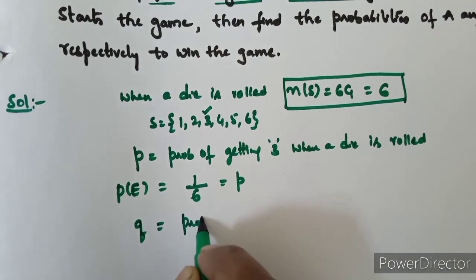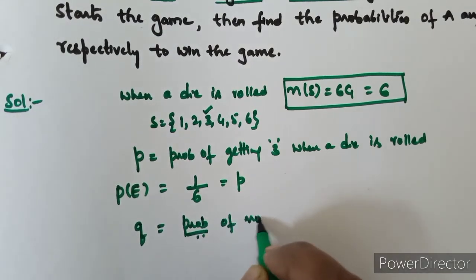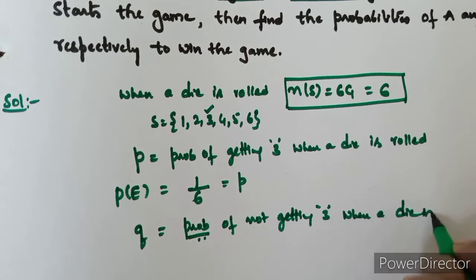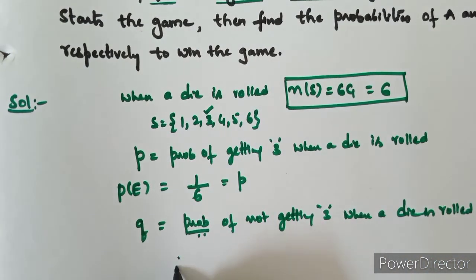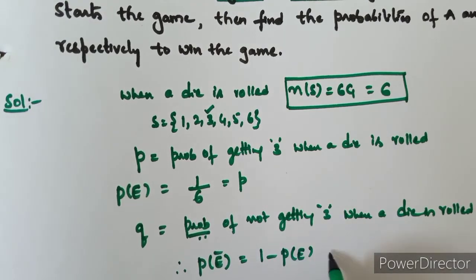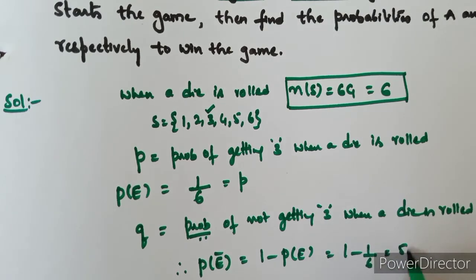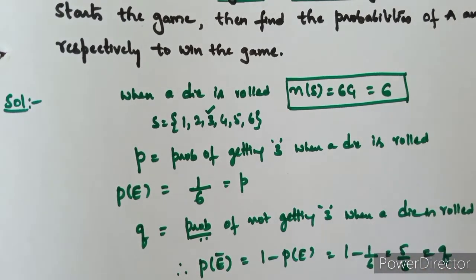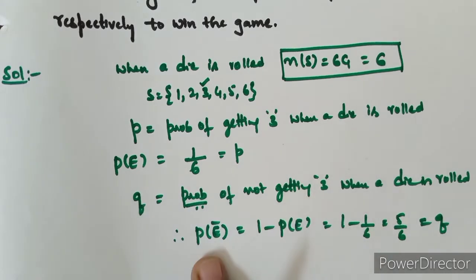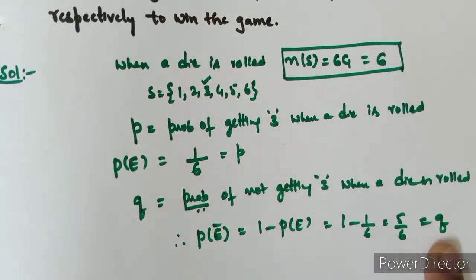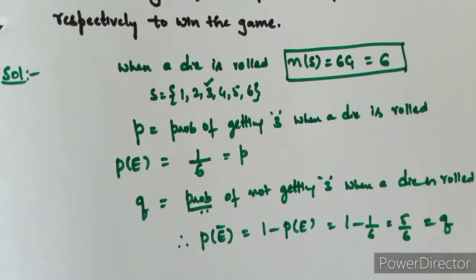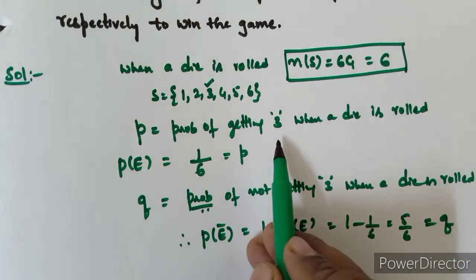Q: probability of not getting 3 when a die is rolled. We call it small q, the probability of failure. Probability of success is p of E, and probability of failure is p of E bar, small q. There are 6 possible outcomes, n of S is equal to 6.